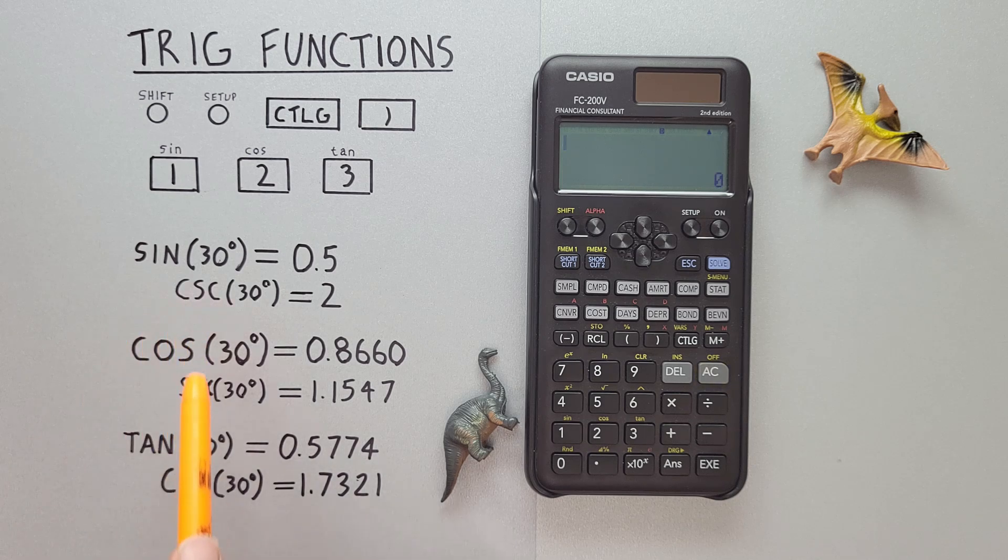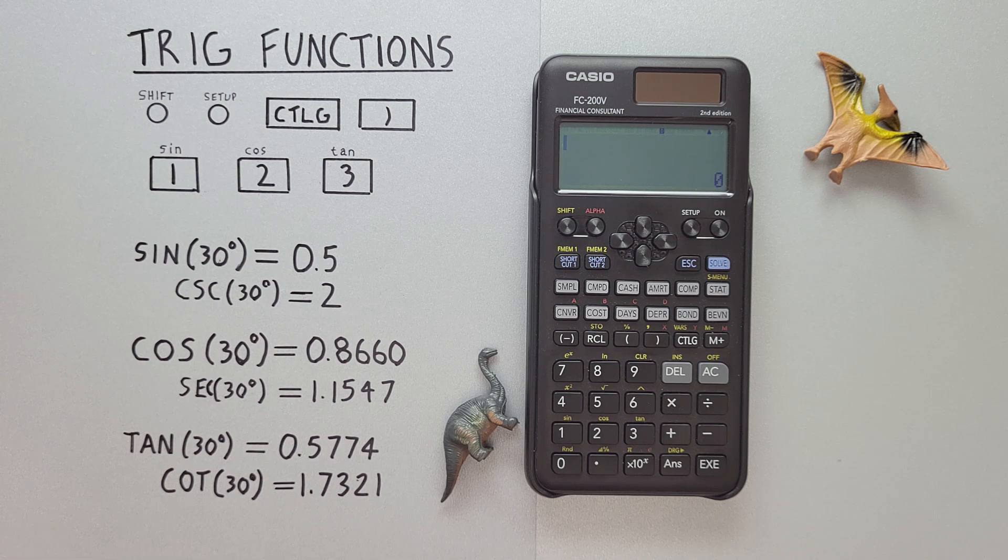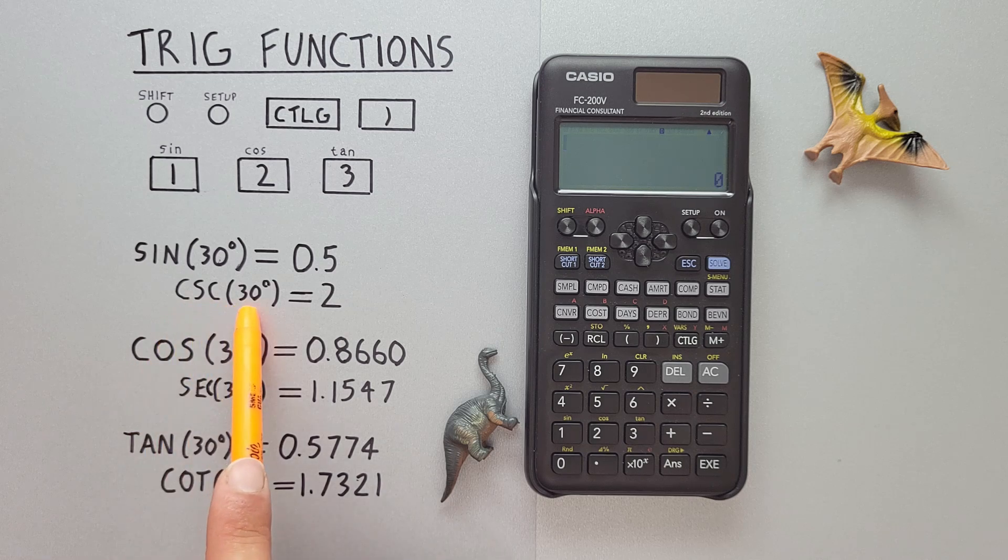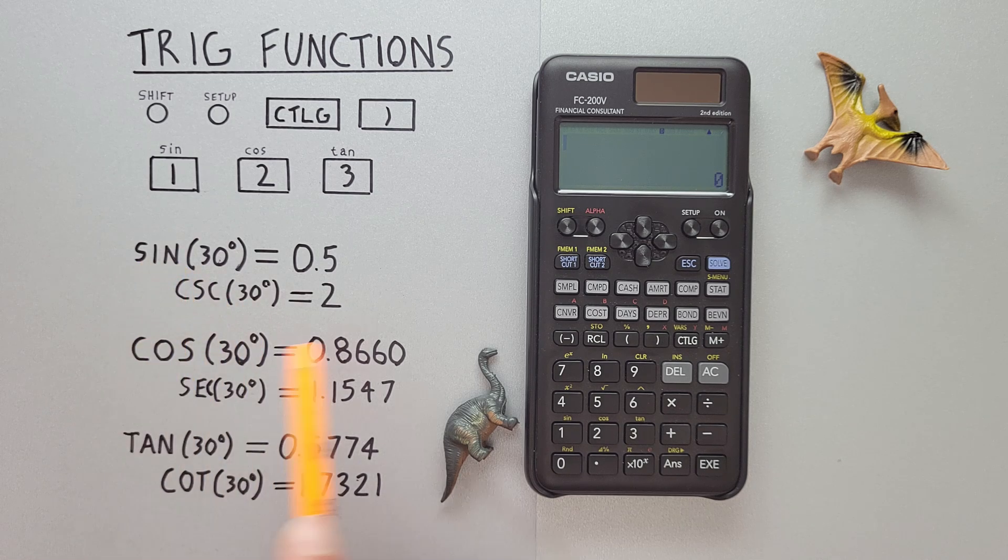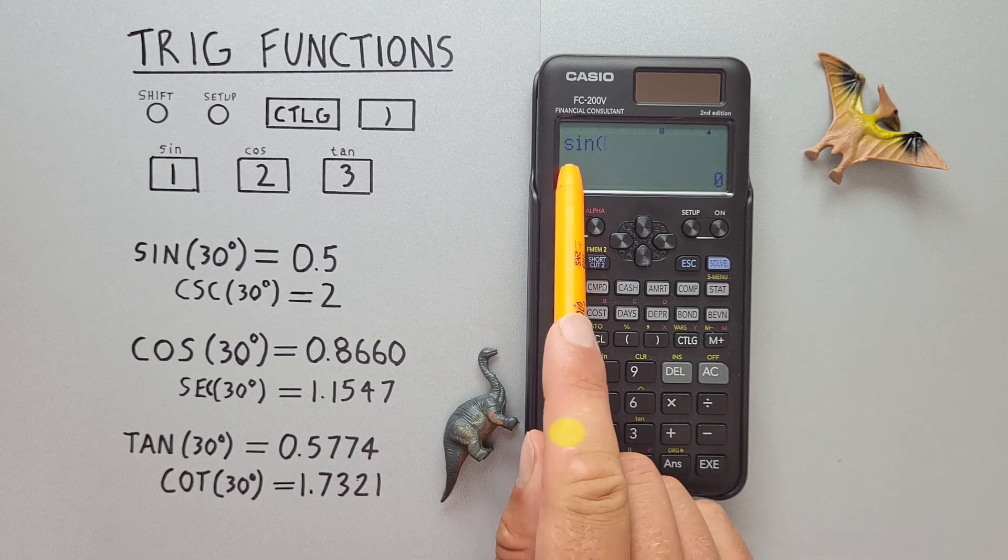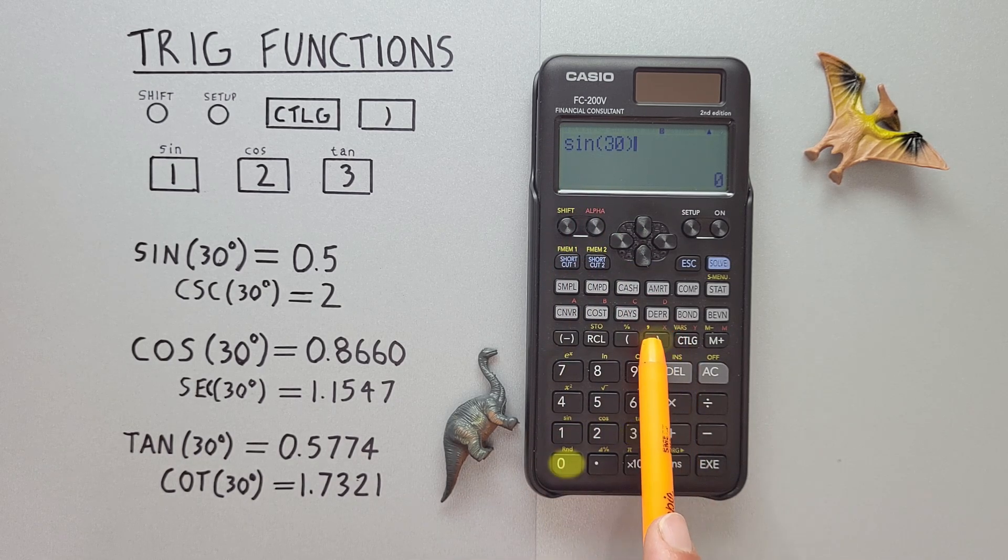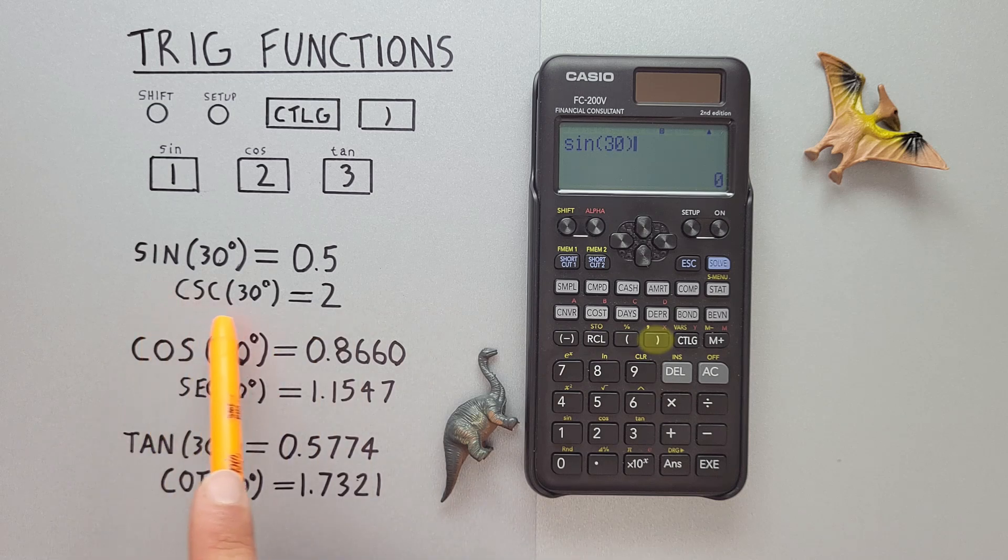What about cosecant, secant, or cotangent? To get these, we need to use the inverse of the corresponding function. So for example, if we want cosecant of 30 degrees, we need to use sine. So we go shift one for sine, there we go. Enter the 30, close our bracket. And now we need to inverse this.